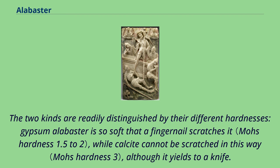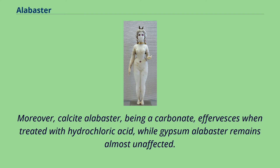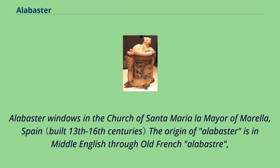The two kinds are readily distinguished by their different hardnesses. Gypsum alabaster is so soft that a fingernail scratches it, while calcite cannot be scratched in this way, although it yields to a knife. Moreover, calcite alabaster, being a carbonate, effervesces when treated with hydrochloric acid, while gypsum alabaster remains almost unaffected.